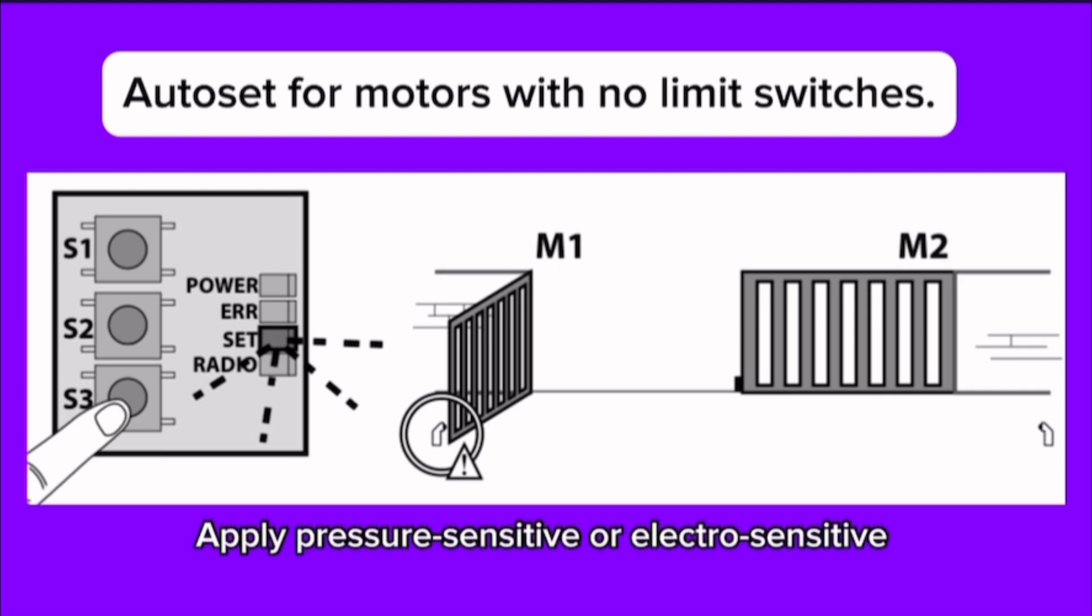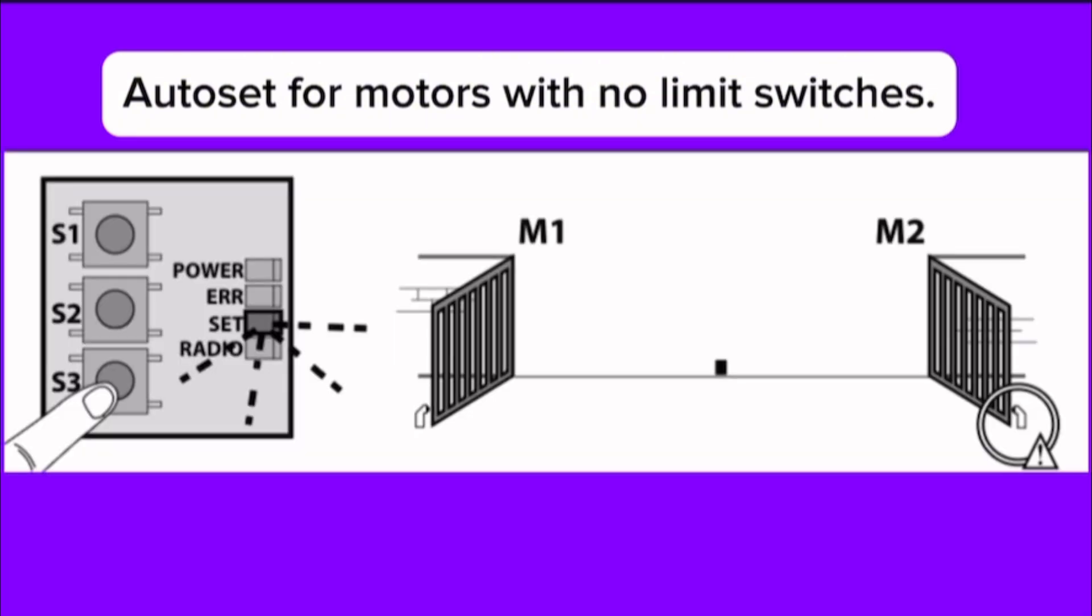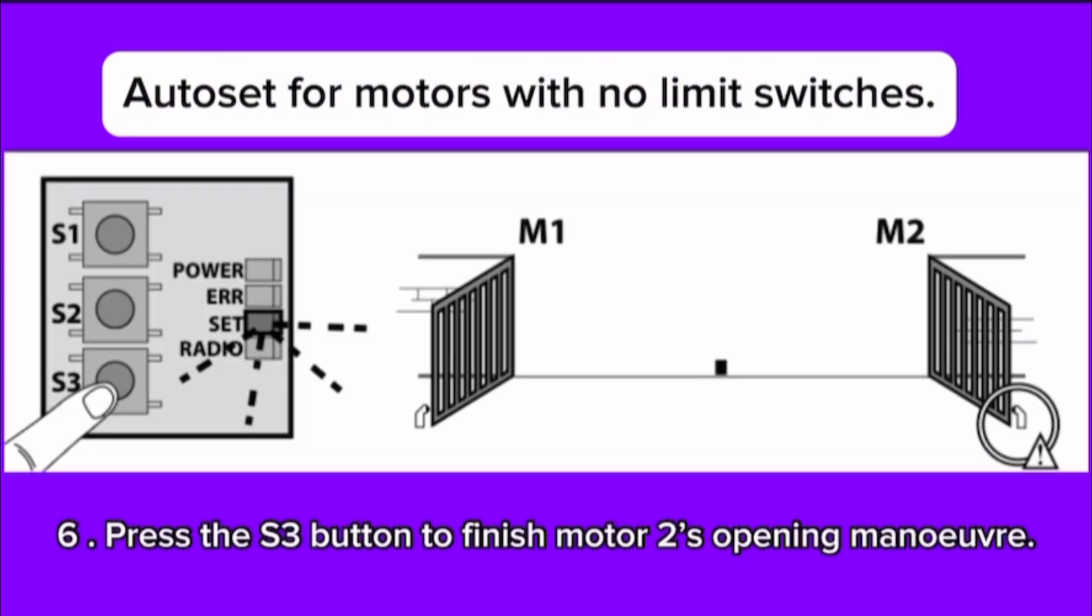Apply pressure-sensitive or electro-sensitive protective devices, such as a safety edge. Step 5: Motor 2 starts opening automatically. Step 6: Press the S3 button to finish motor 2's opening maneuver.